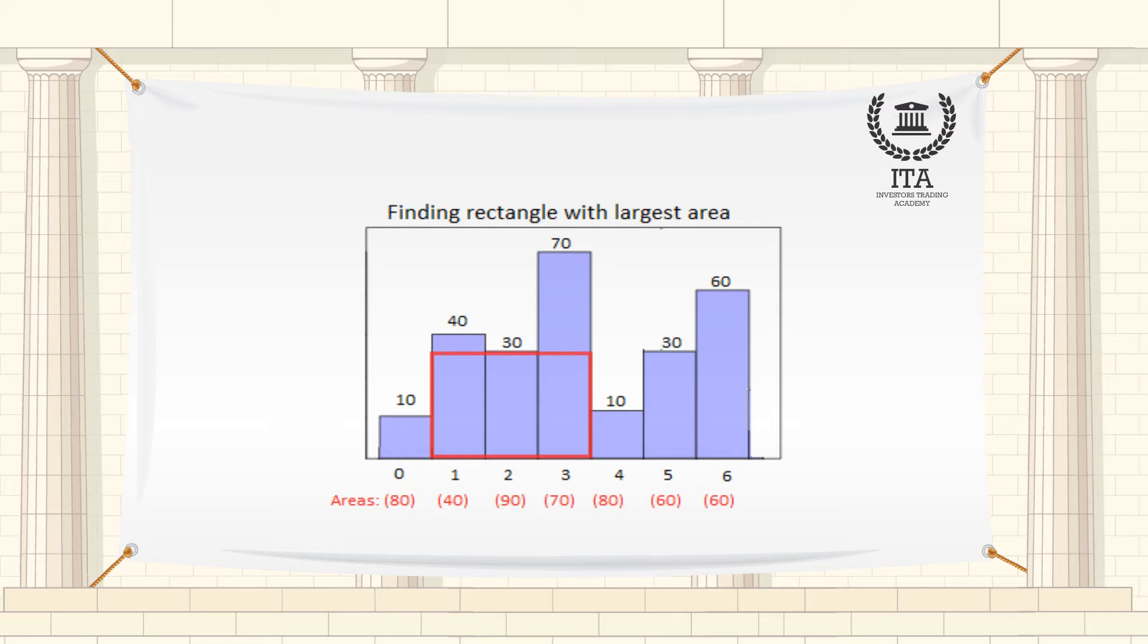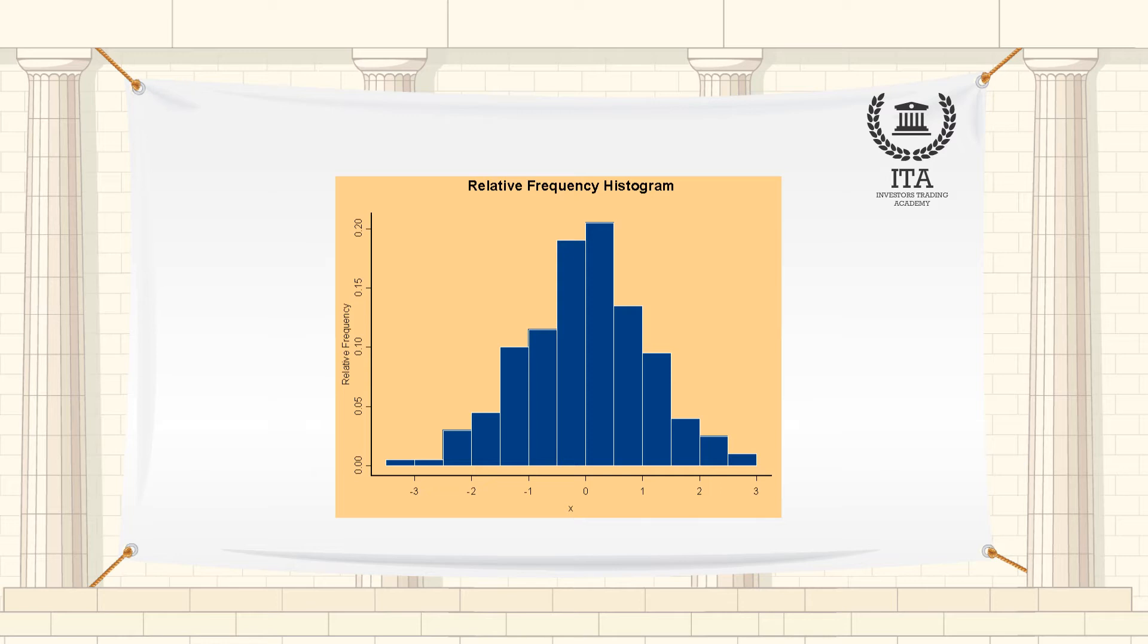A histogram may also be normalized, displaying relative frequencies. It then shows the proportion of cases that fall into each of several categories, with the sum of the heights equaling 1. The bins are usually specified as consecutive, non-overlapping intervals of a variable. The bins or intervals must be adjacent and usually equal size.